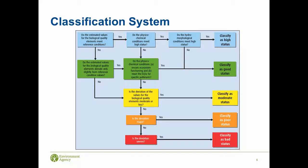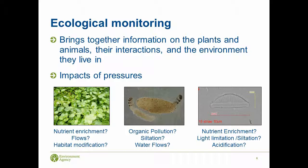The classification system brings together information on plants and animals, the way they interact, and the environment they interact with. This helps tell us about the pressures impacting them in the catchment. River plants can tell us a lot about how nutrient-impacted rivers are and about flows and habitat modification. Invertebrates can tell us about siltation, sedimentation, and organic pollution. Diatoms are a good diagnostic element for nutrient enrichment, light limitation, siltation, and acidification.